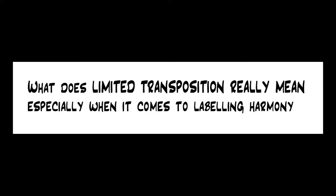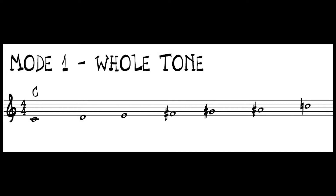When it comes to any scale or mode, we want to look at the collection of whole steps and half steps in it. If we look at Messiaen's mode number one — also known as the whole tone scale — we can see that we've taken the 12 notes of the octave and divided it into even whole steps. Here we have a scale starting on C: C, D, E, F sharp, G sharp, A sharp, and back to C. Because we have a six-tone scale, there is a diminished third from A sharp back to C natural.